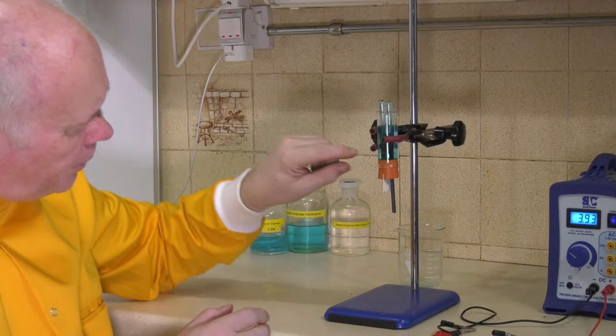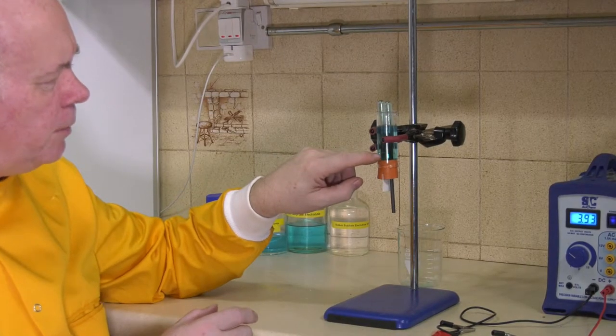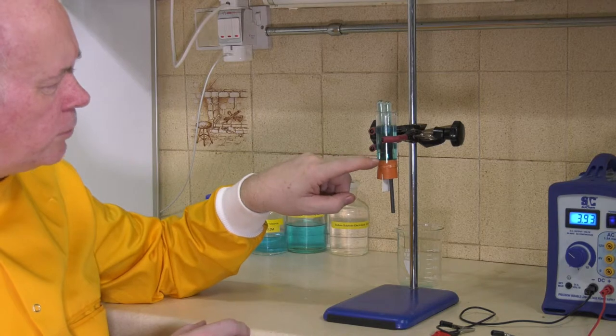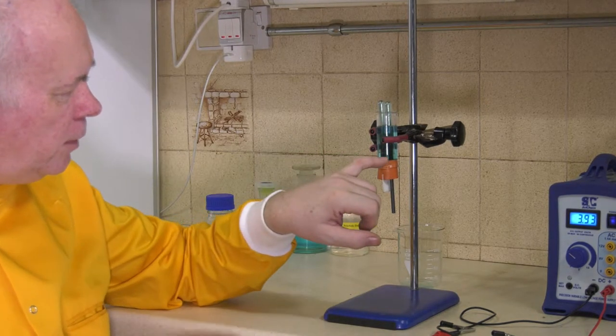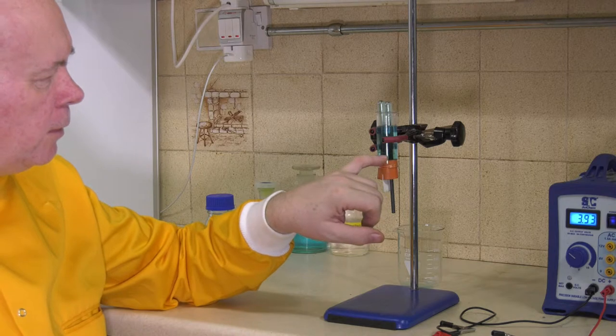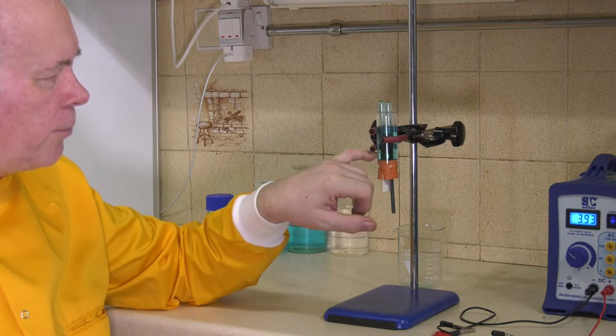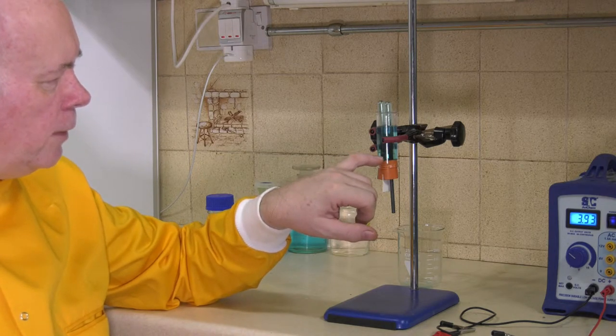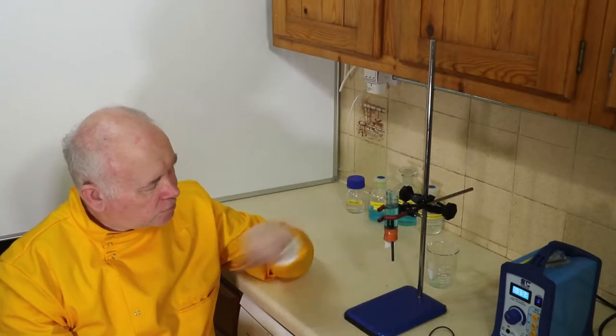But there's about half to one centimeter gap on top, and the advantage of this is that electricity can go through the liquid from one electrode to the other, not being stopped by the glass of the test tubes.